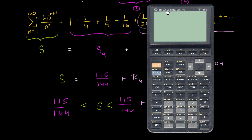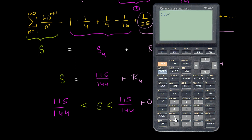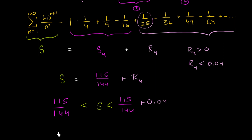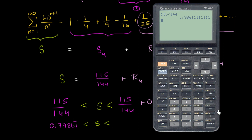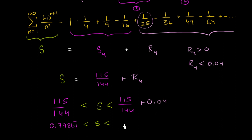Let's get the calculator out to get a better sense of things. 115 divided by 144 is 0.79861 repeating. So 0.79861 repeating is less than s, which is less than this plus 0.04, giving us 0.83861 repeating. I could have done that in my head — I don't know why I resorted to a calculator.